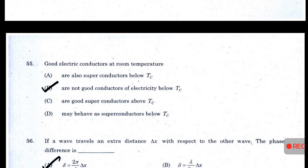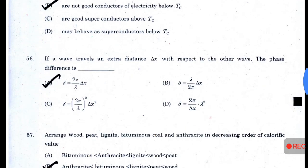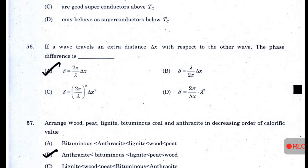Good electric conductors at room temperature — answer B — are not good conductors of electricity below Tc. If a wave travels an extra distance Δx with respect to another wave, the phase difference is δ = (2π/λ)·Δx.